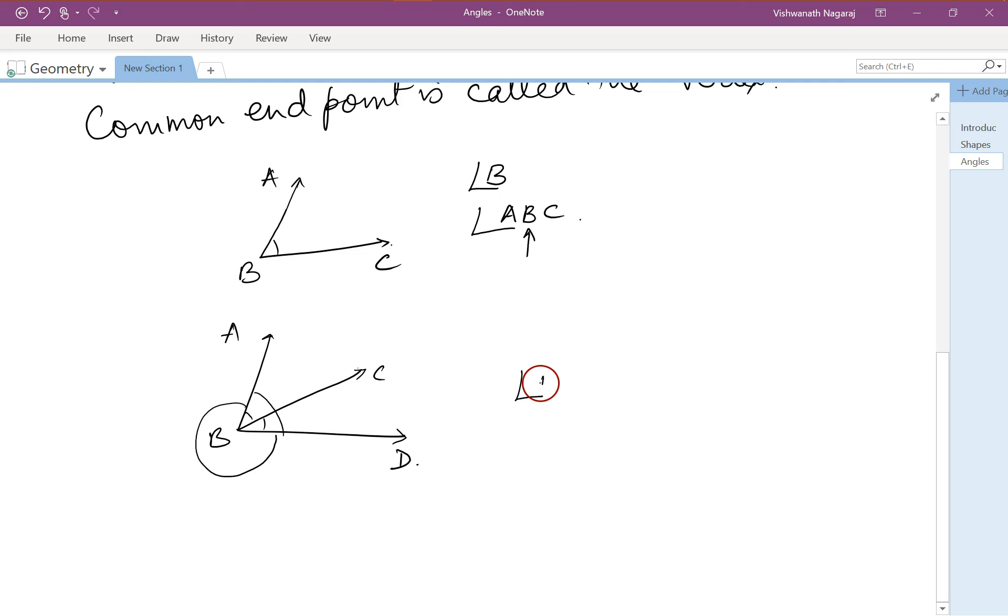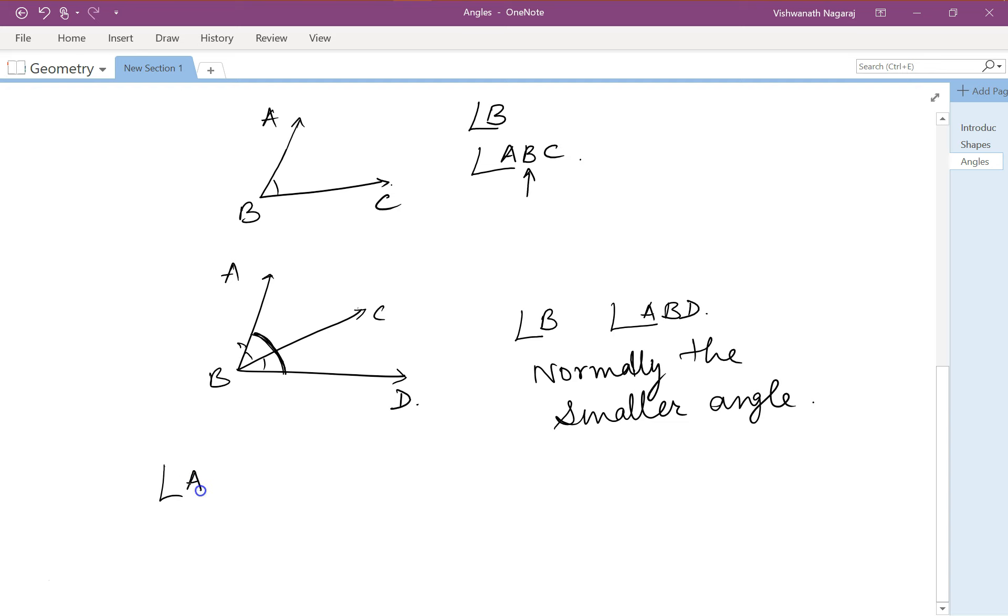So how do we refer to that? Now here angle B means angle ABD. Now which ABD, whether this one or this one? So normally the smaller angle, so here ABD will refer to this one and not to this one. Then angle ABC refers to this one.